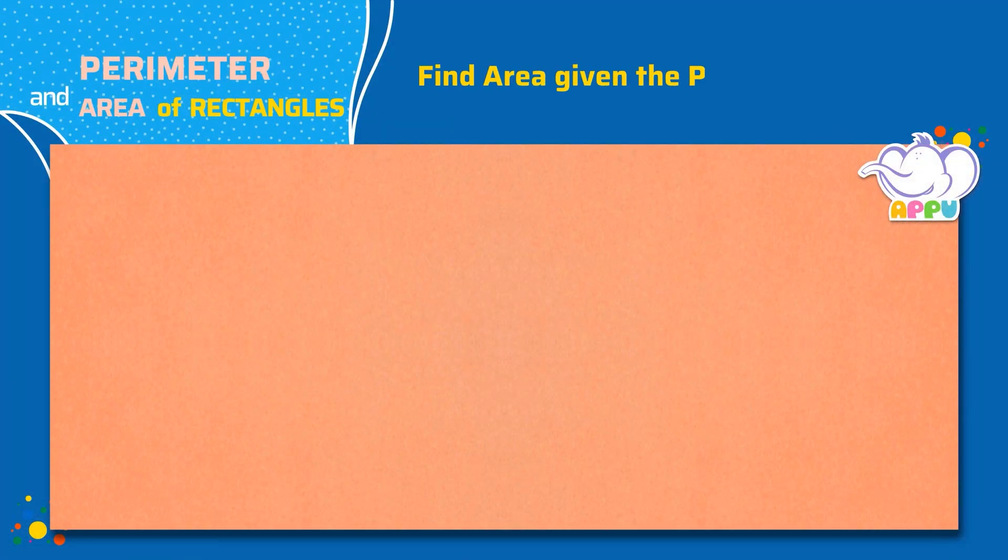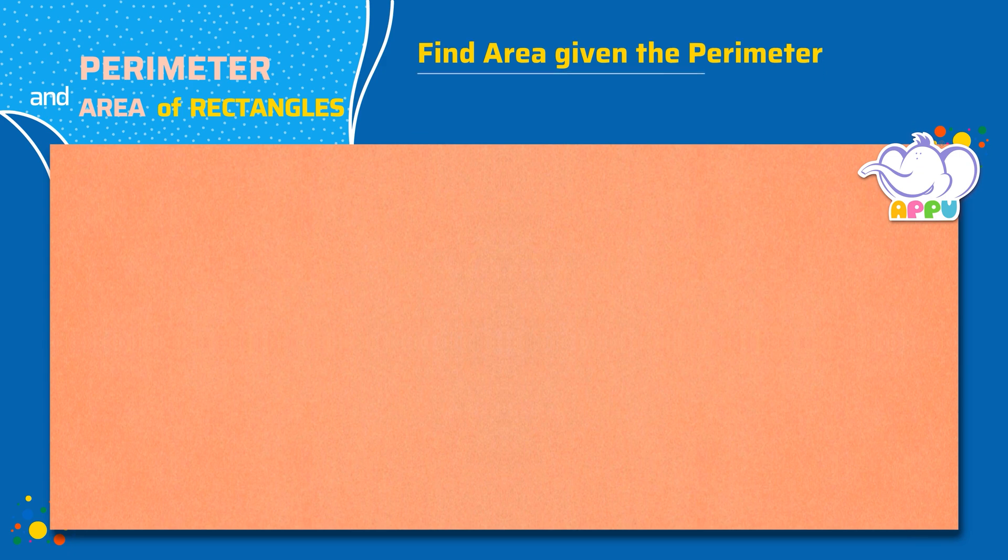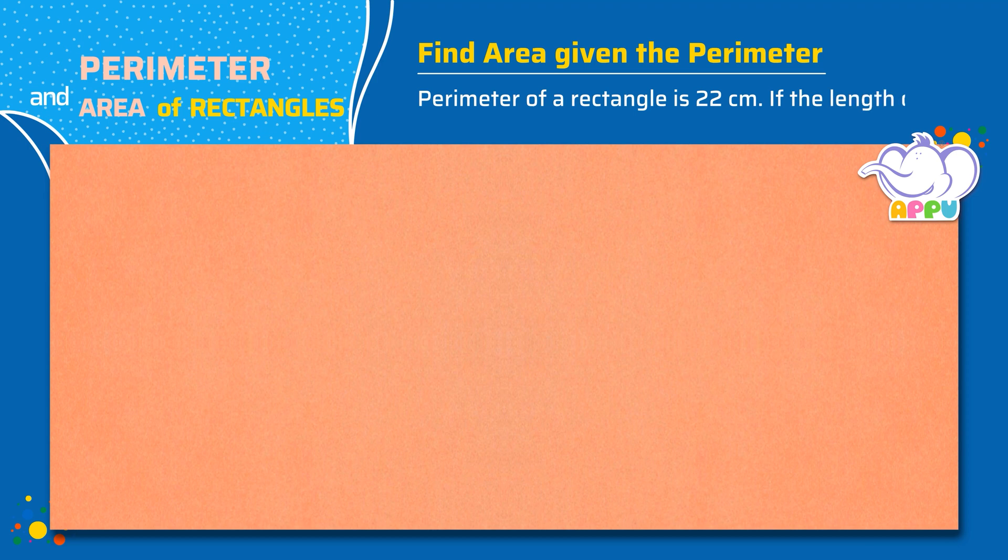Find area given the perimeter. Perimeter of a rectangle is 22 centimeters. If the length of the rectangle is 5 centimeters, what is its area?